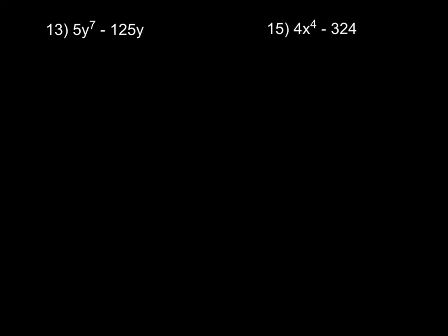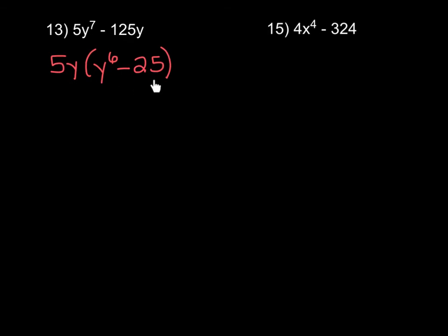Now flip to number 13. What you'll notice when you first look at this is that although it is a difference, this is not a perfect square and neither is the other term. So this isn't a difference of perfect squares right away. But with any factoring problem, the first thing you want to do is factor out a greatest common factor. Looking at both terms, you can factor out a 5 as well as a y, so let's factor out 5y. That leaves us with y to the sixth minus 25. Now let's see if this is a difference of perfect squares.